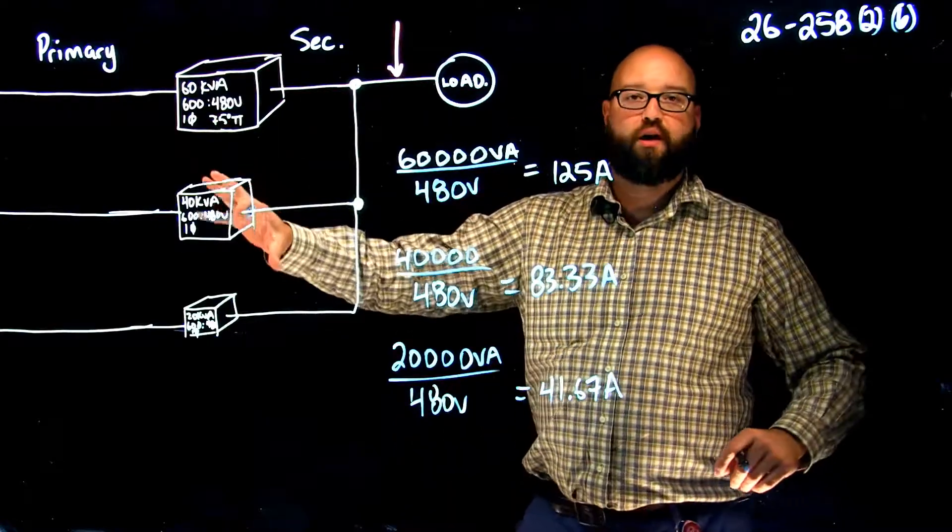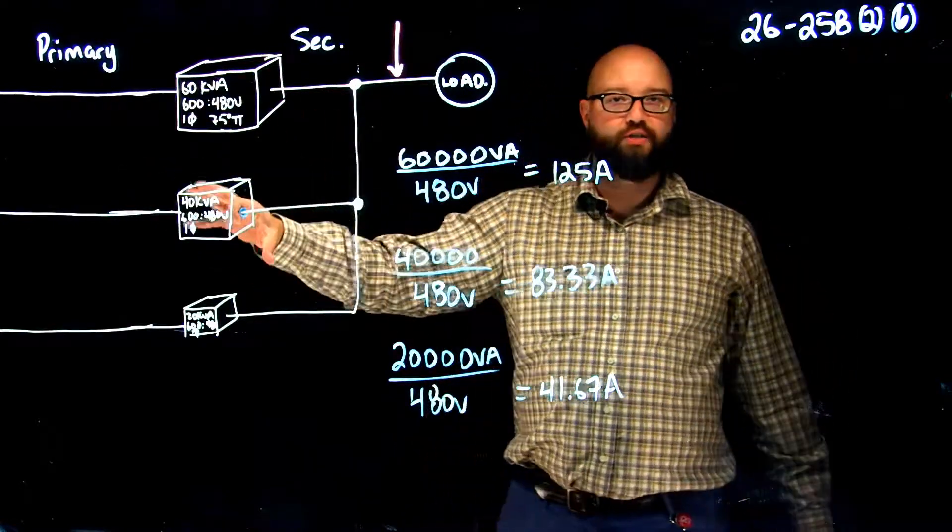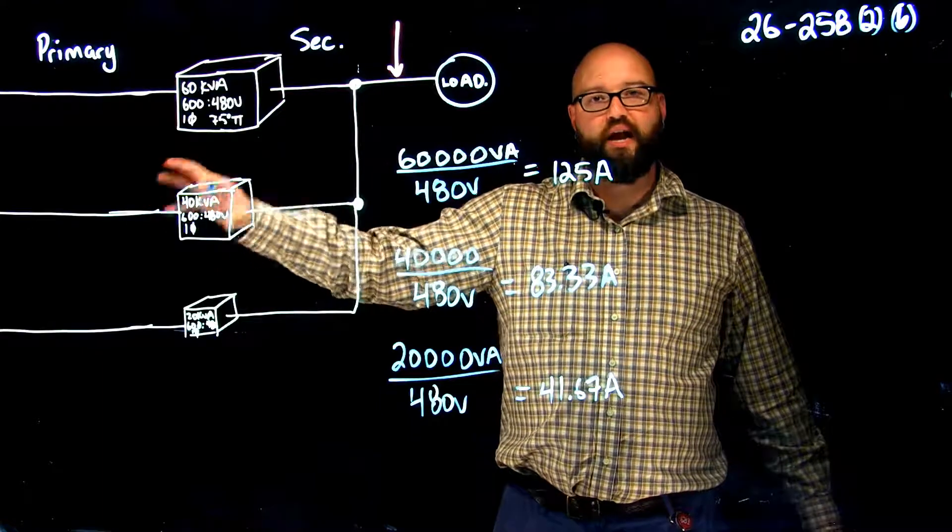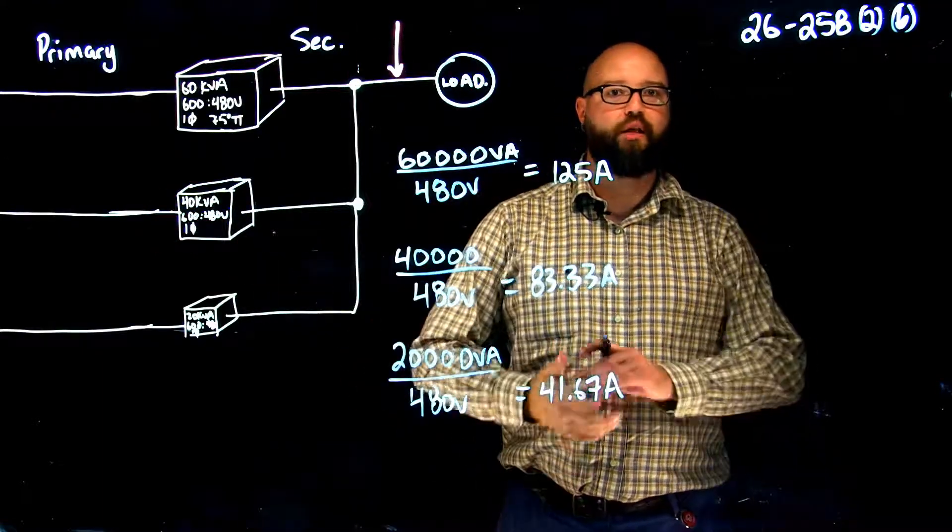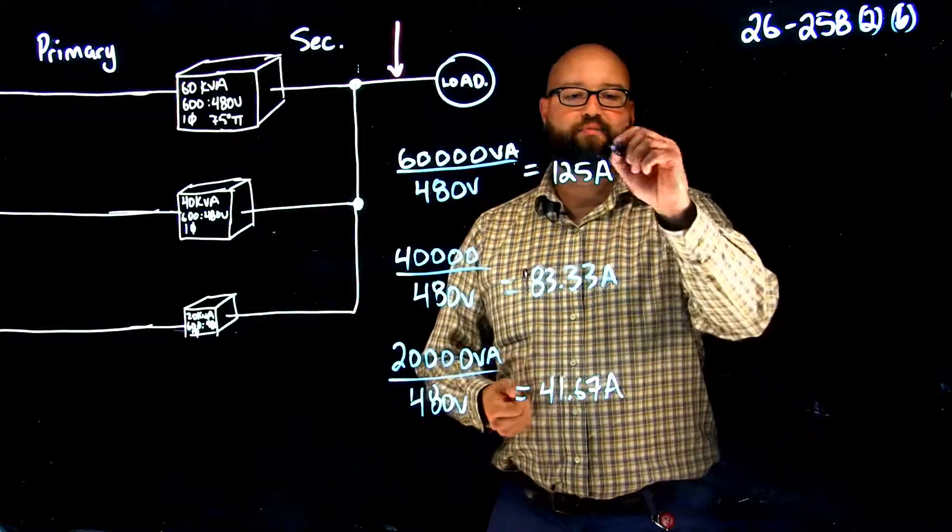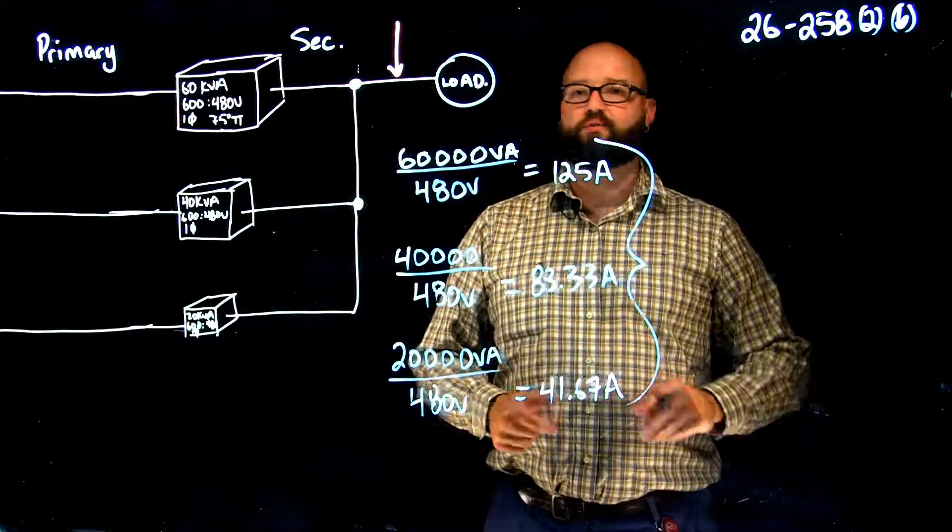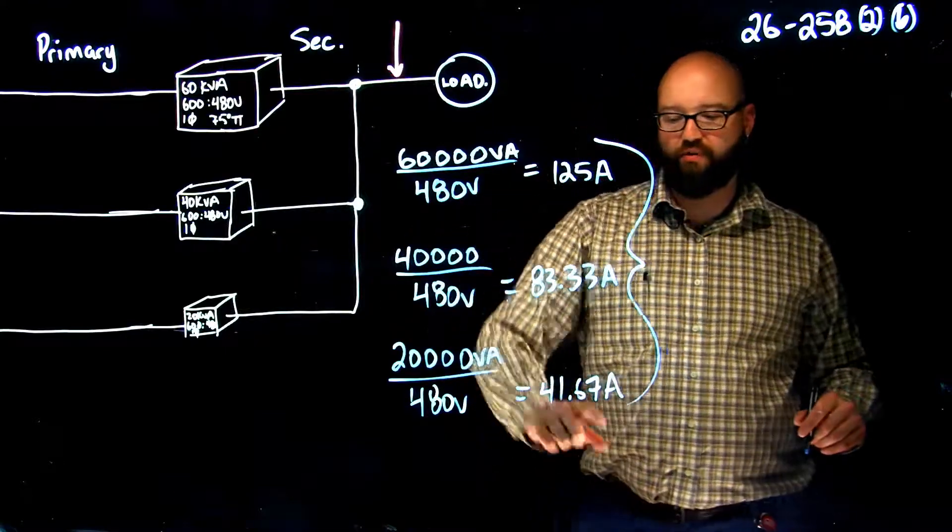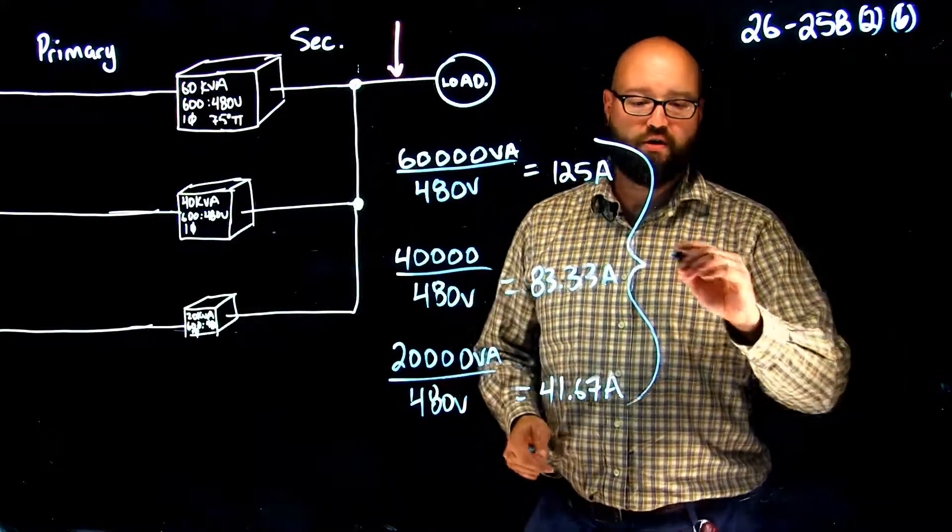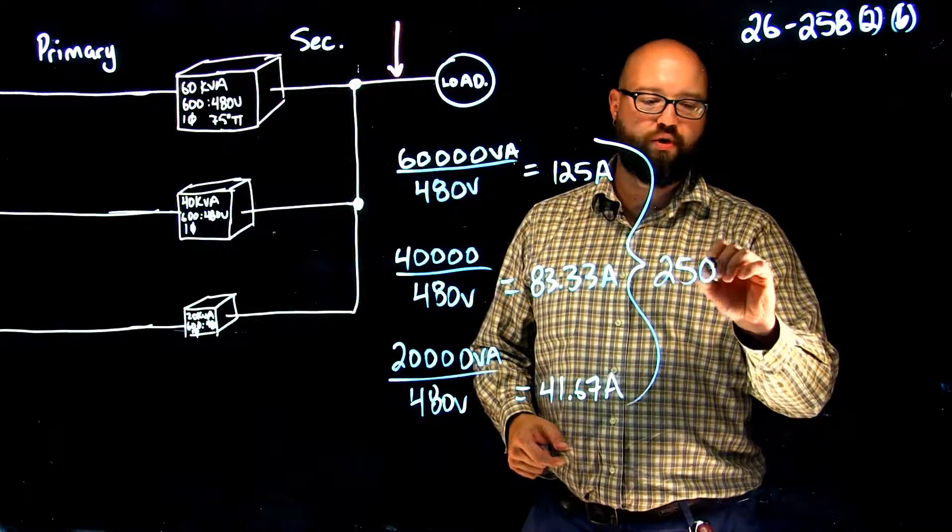Now on the primary side when we had a parallel we took the largest at 125% and added the rest, this is where the difference is when we move to the secondary parallel connection. We are going to take the total of all of these, we're just going to add them straight up, which if we take 125, 83.33 and 41.67 we should get a nice even 250 amps.